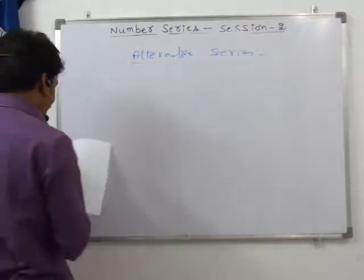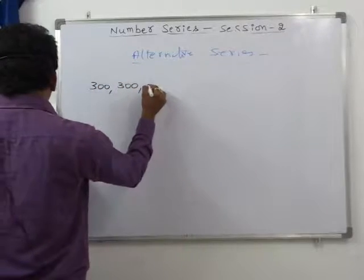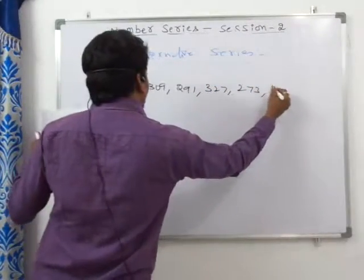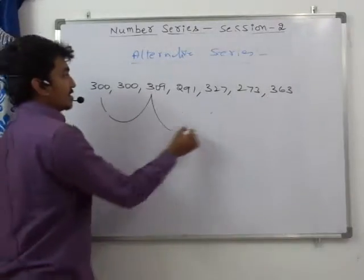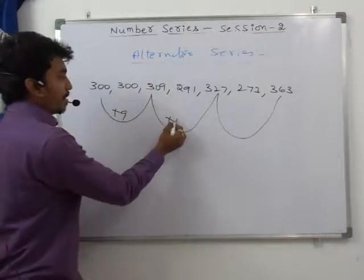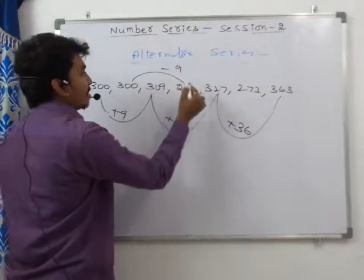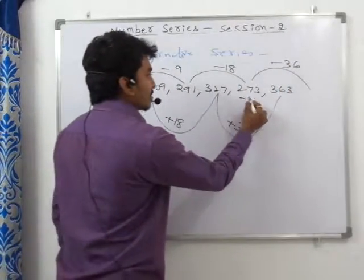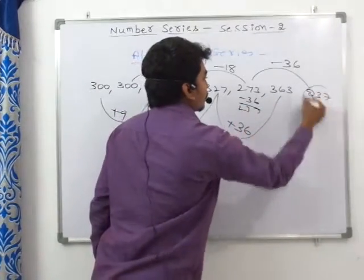Example: the series 300, 300, 309, 291, 327, 273, 363 — find the missing number. Looking at alternate terms: one series goes +9, +18, +36 (doubling); the other goes -9, -18, and next should be -36. So 273 - 36 = 237. The missing number is 237.